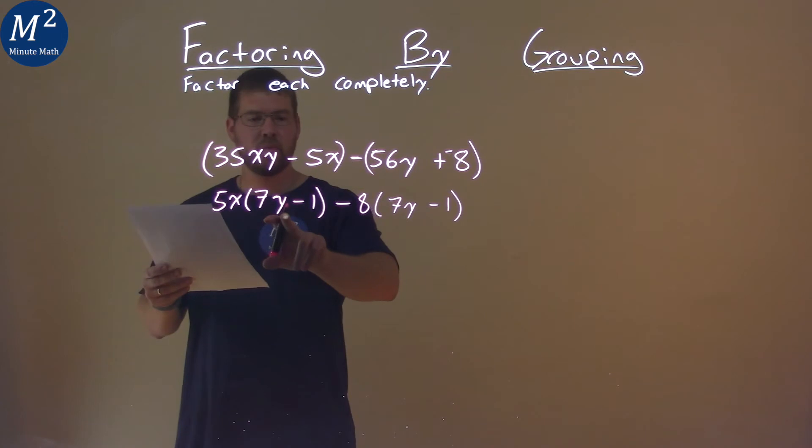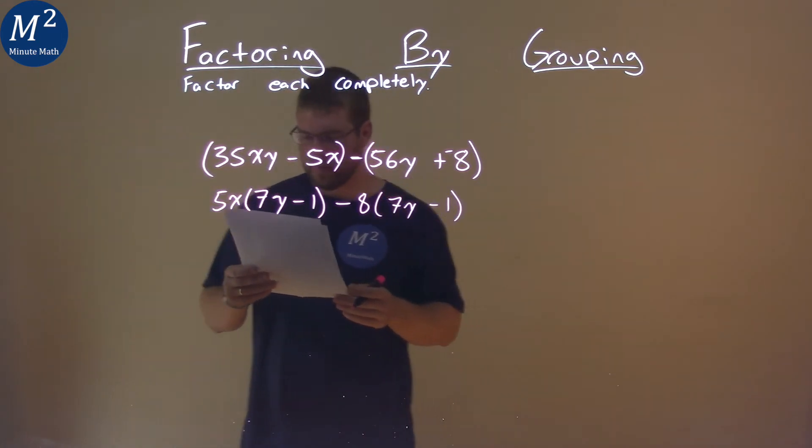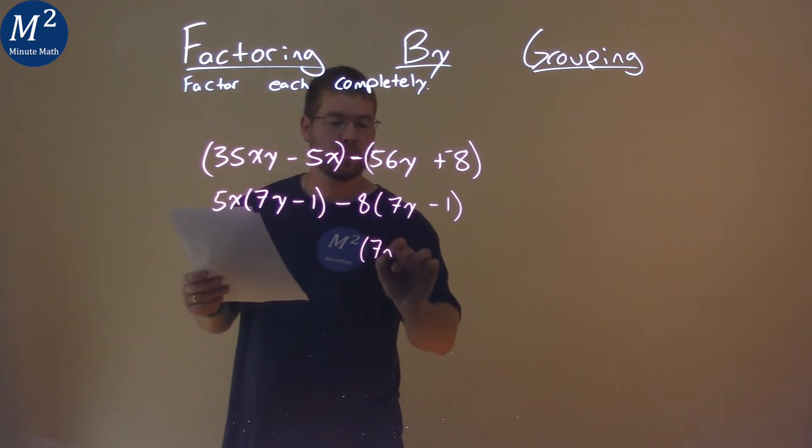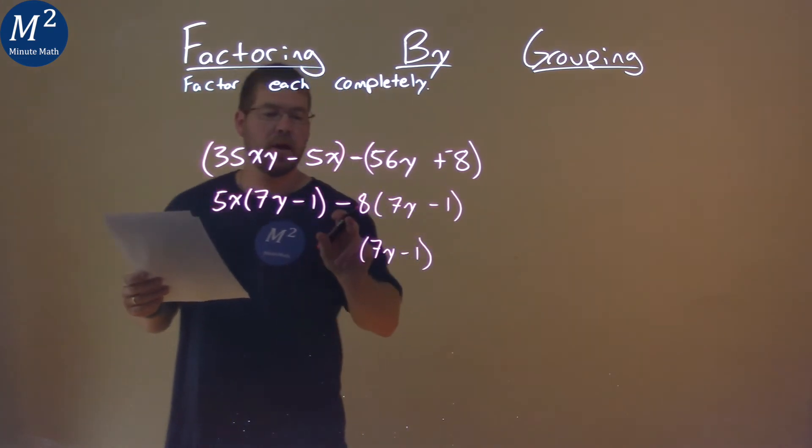Well, what do you notice now? 7y minus 1, and a 7y minus 1 right there. So I can pull the 7y minus 1 out of both parts, and what am I left with?